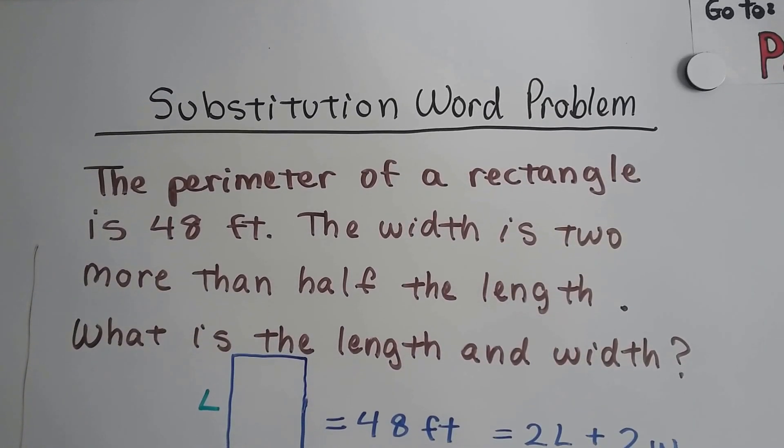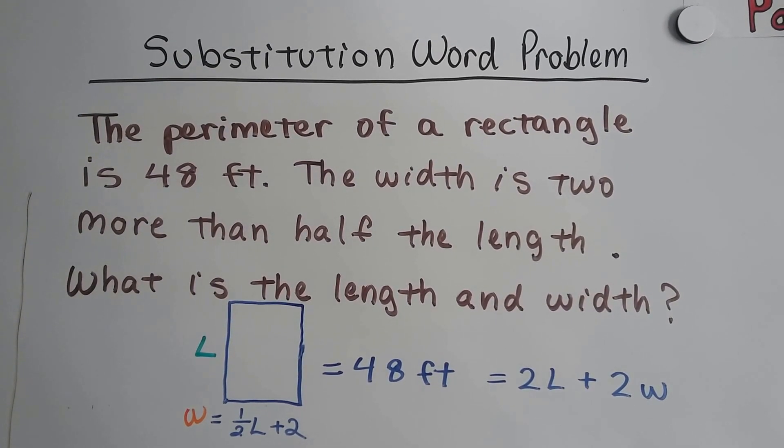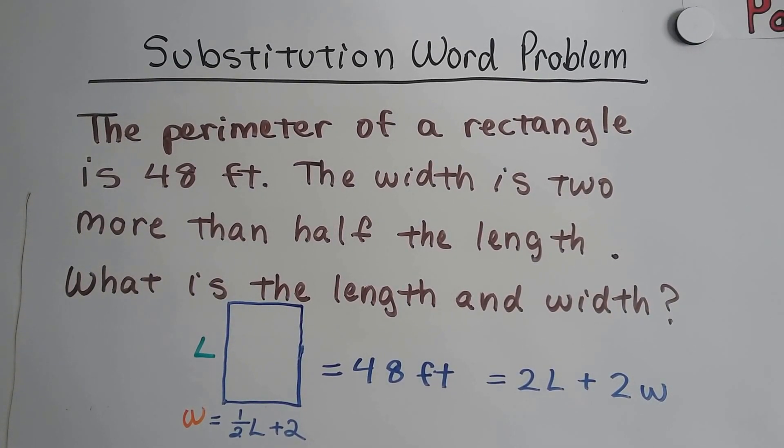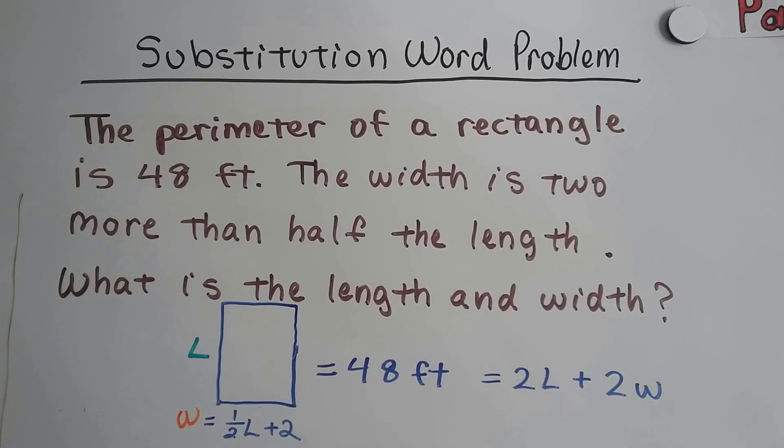Algebra 1 substitution word problem. Okay, so here's our problem. The perimeter of a rectangle is 48 feet. The width is two more than half the length. What is the length and width?